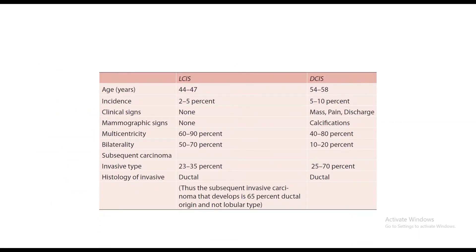The difference between LCIS and DCIS: age of LCIS is 44 to 47, DCIS is 54 to 58. Incidence is 2 to 5% for LCIS, 5 to 10% for DCIS. Clinical signs are none for LCIS; mass, pain, and discharge for DCIS. Mammographic signs are none for LCIS. Multi-centricity is 60 to 90% in LCIS, 40 to 80% in DCIS. Bilaterality is 50 to 70% vs 10 to 20%. Importantly, the subsequent invasive carcinoma that develops in LCIS is 60% ductal — not lobular type. This is a very important point to remember.